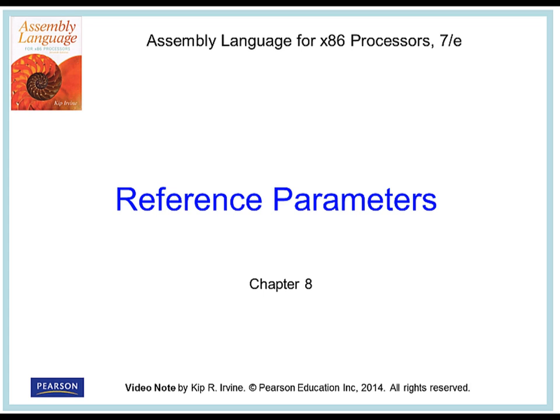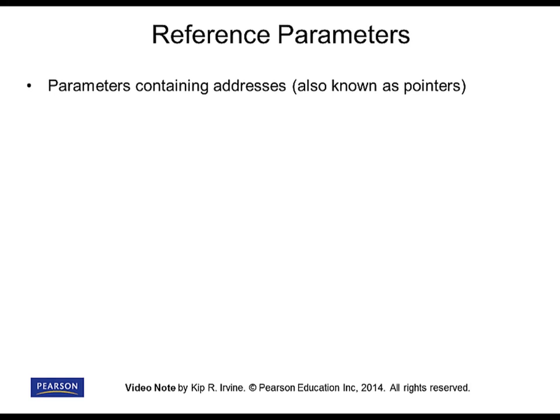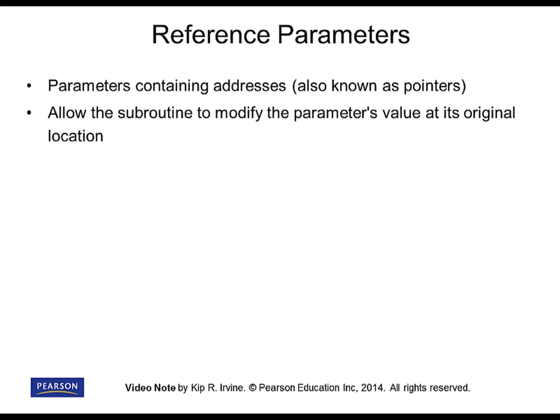In this video note, I'd like to talk about reference parameters from Chapter 8. We know reference parameters as parameters passed on the runtime stack from a calling program to a subroutine that contain addresses of data known in the calling program. These addresses are put on the stack, and the subroutine wants to use those addresses to access the data located at them.